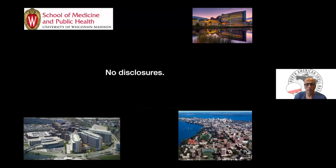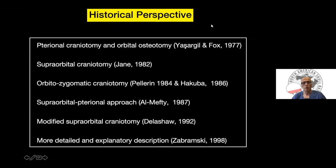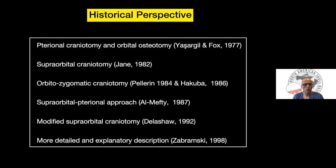This is our lovely city, Madison, Wisconsin. For a brief historical perspective on the Orbitosygomatic approach: Yasargil first described the frontotemporal craniotomy with orbital osteotomy. Jane called this the superorbital craniotomy, and Pellerin and Hockuba modified it into an Orbitosygomatic Craniotomy in 1986. Al-Mefty further modified and renamed it the superorbital frontotemporal approach, with Della's contributions, and finally the Barrow Clinic provided a very detailed surgical anatomy description in 1998.